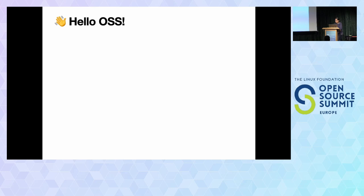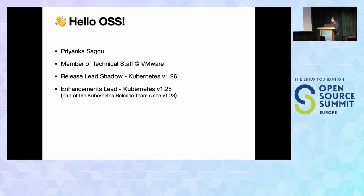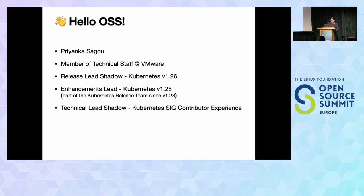Let me tell you a bit about myself. My name is Priyanka Sagu. I work at VMware as a member of Technical Staff. Currently I'm one of the release lead shadows for the ongoing Kubernetes 1.26 cycle, was enhancements lead for Kubernetes 1.25, and have been on the release team since 1.23. I'm also one of the three technical lead shadows for the special interest group contributor experience in the Kubernetes project. You can find me as psagu on Kubernetes Slack and underscore psagu on Twitter.